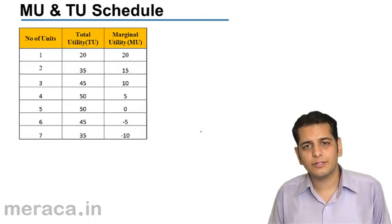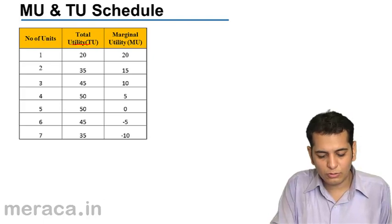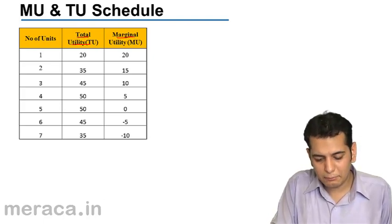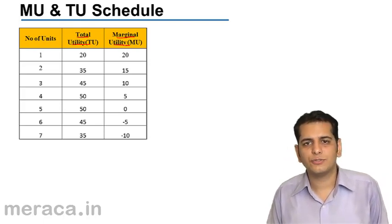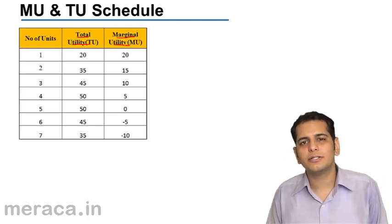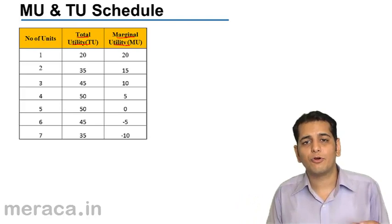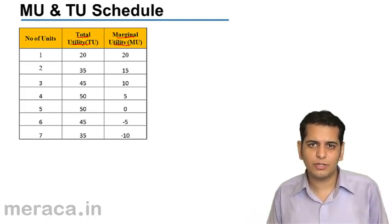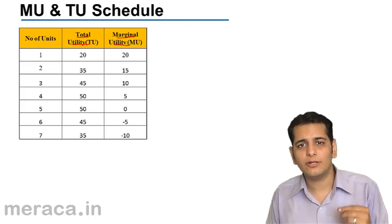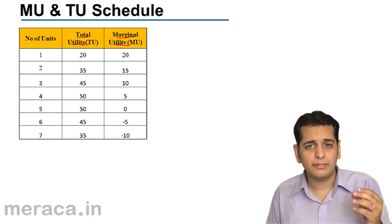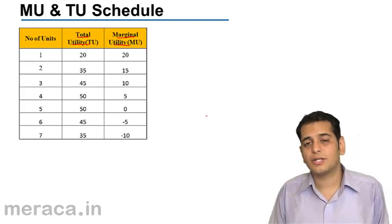Let's understand this with the help of a schedule. We are already clear on total utility and marginal utility. Total utility is the total satisfaction derived from all consumptions taken together. Marginal utility is the additional satisfaction derived from an additional unit of consumption. Now let's understand the schedule given, where a person is consuming a commodity.